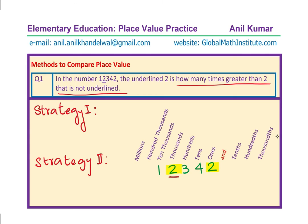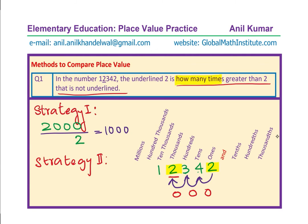Strategy 1: as you move towards the left, the number is of higher place value. The underlined 2 is in the thousands position, so its value is 2,000. The other 2 is only 2 ones. When we ask how many times greater, we divide one by the other: 2,000 divided by 2 gives 1,000. So the answer is 1,000 times. Strategy 2: count the positions you move from the non-underlined 2 to the underlined 2 — that is 3 positions to the left, each multiplying by 10, giving 10 × 10 × 10 = 1,000.